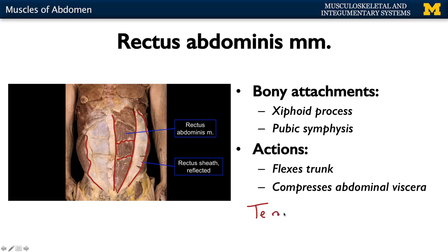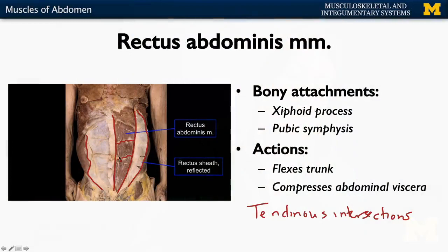Note that the rectus abdominis has what are called tendinous intersections — portions of tendon that anchor the rectus abdominis to the rectus sheath. This is what gives the six-pack or eight-pack appearance: the muscle segments can enlarge, but the tendinous intersections cannot, so it creates that segmented appearance.